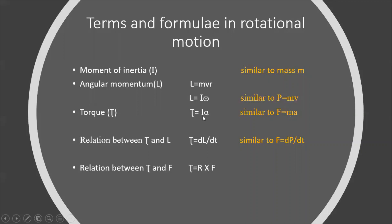In linear motion, force equals mass times acceleration. In rotational motion, the angular acceleration is alpha, so torque equals I·alpha. Also, just as force equals the rate of change of momentum (dp/dt), torque equals dL/dt — the rate of change of angular momentum. Torque is also equal to R cross F.